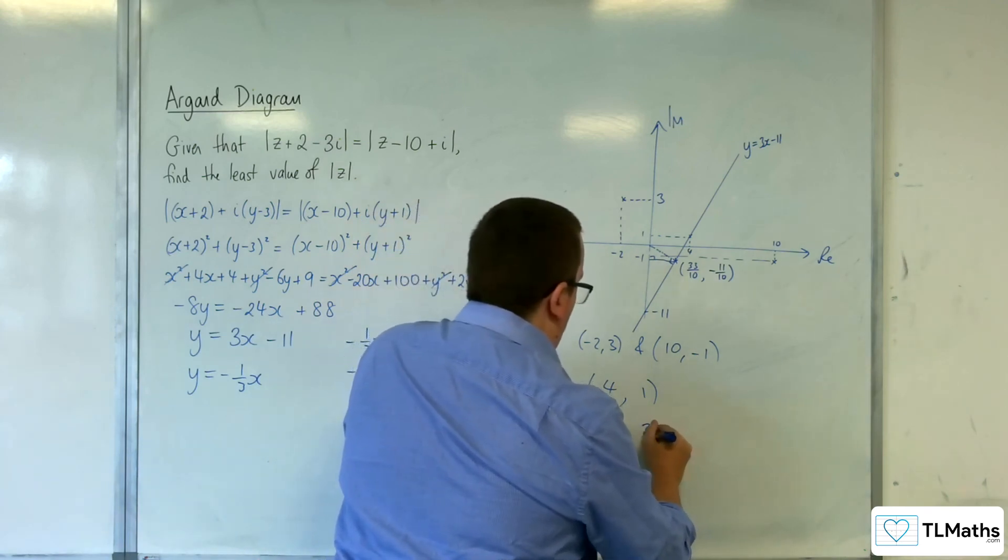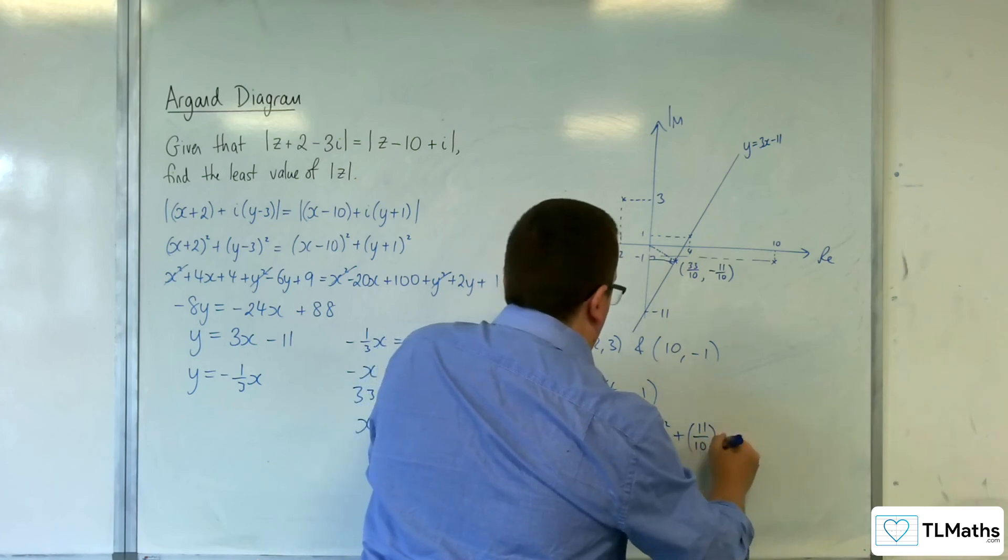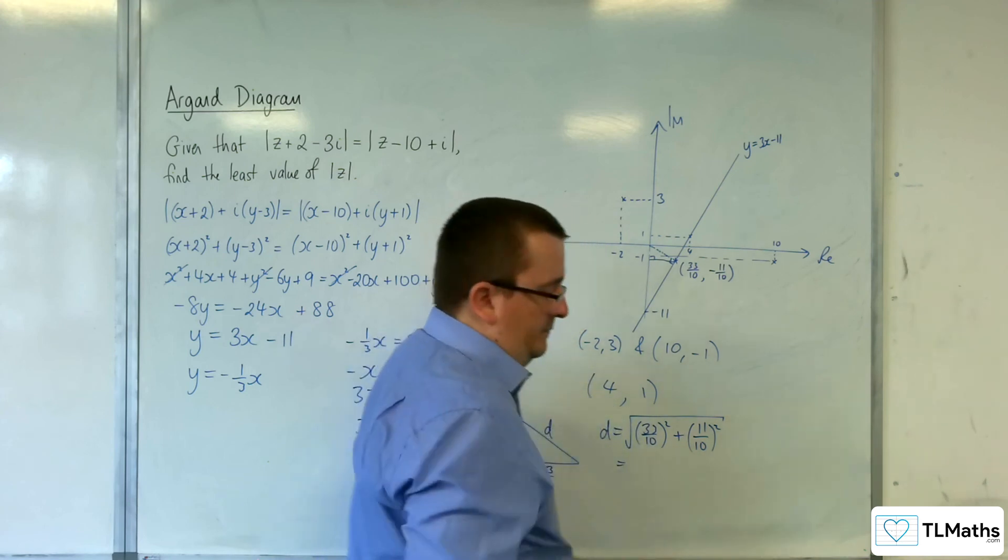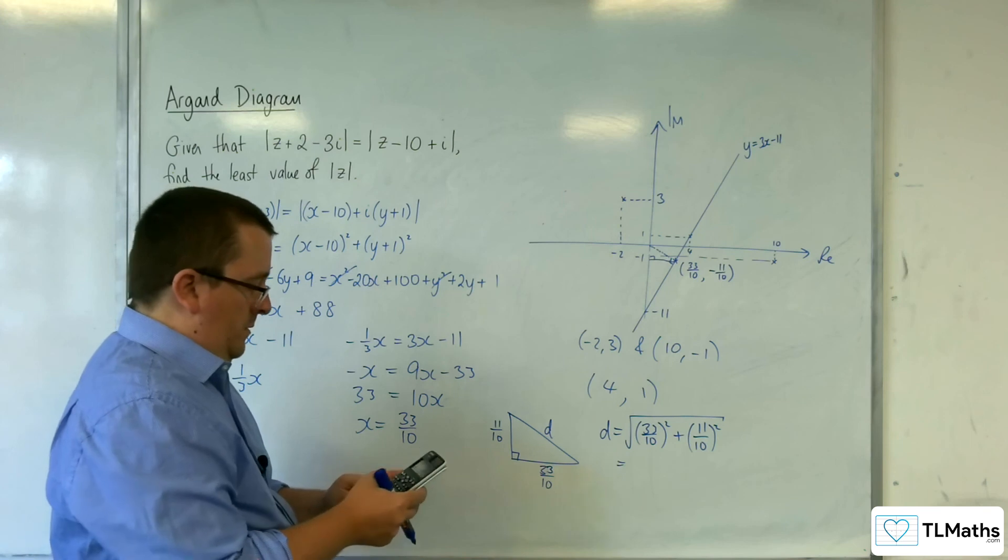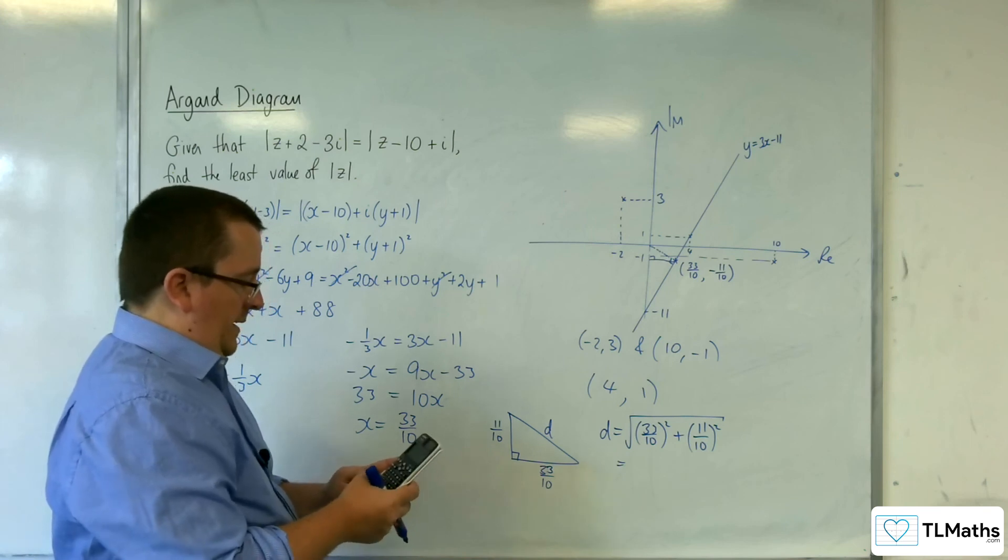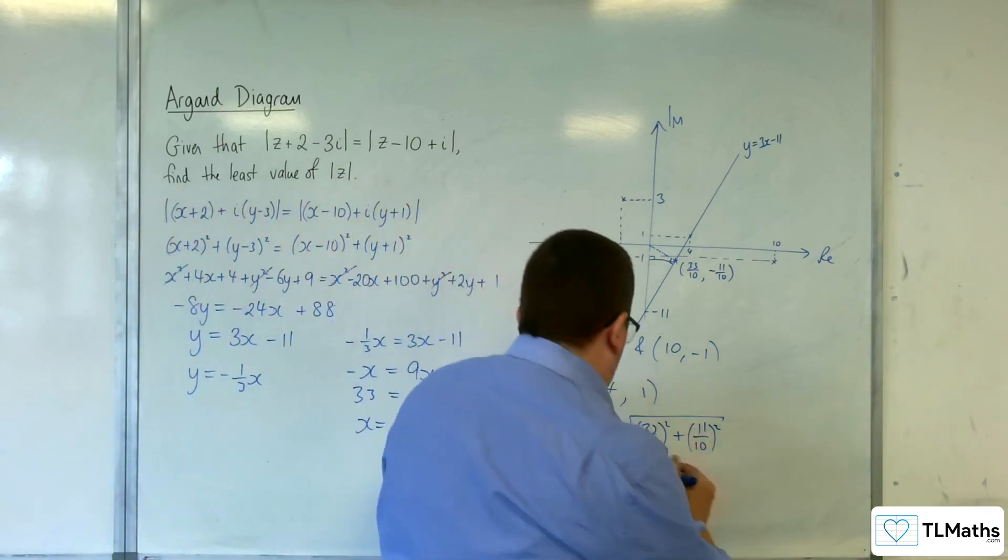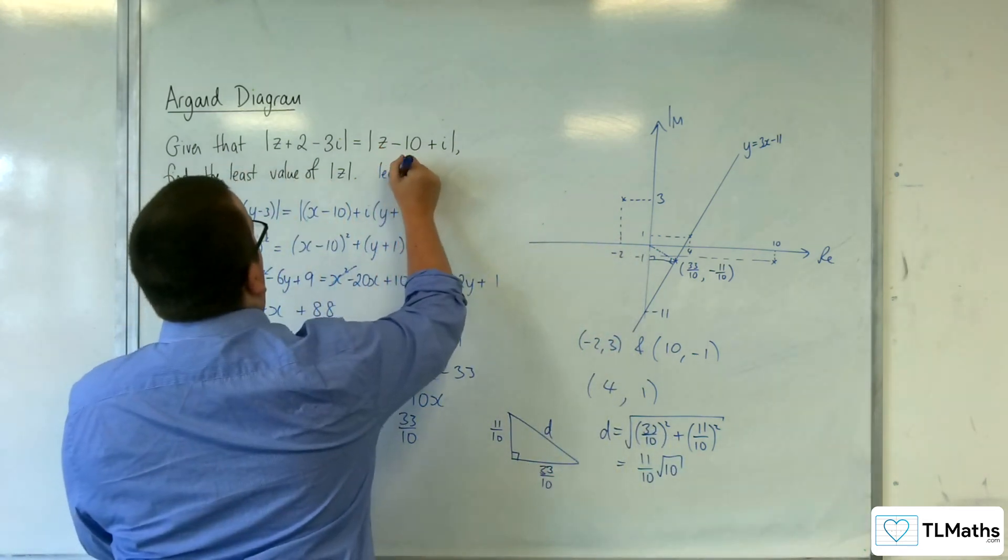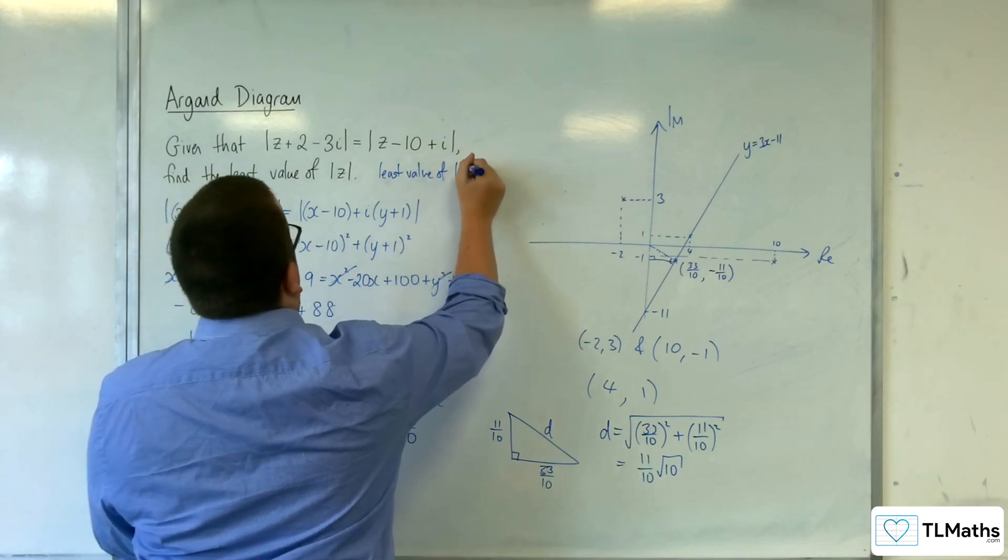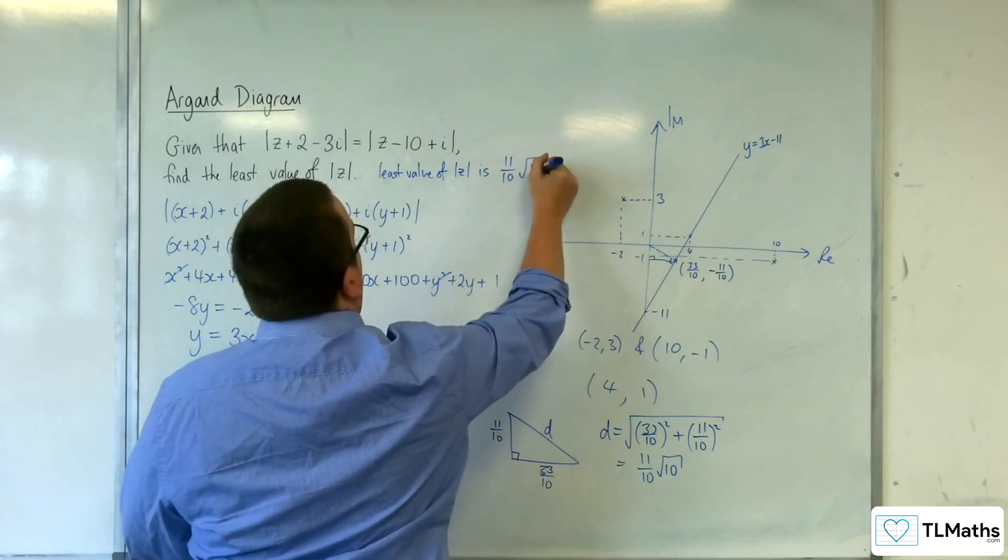So d is going to be equal to 33 over 10 squared plus 11 over 10 squared, square rooted. 33 over 10 squared plus 11 over 10 squared, square root that, and we get 11 tenths root 10. So the least value of mod z is 11 tenths root 10.